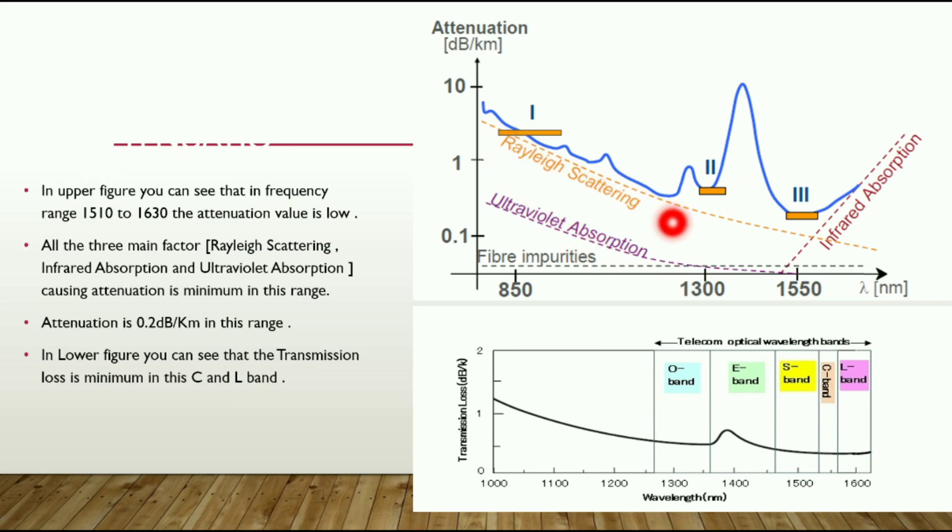You are seeing the Rayleigh scattering, the ultraviolet absorption, and the infrared absorption. These are the three main factors which are below in this range of 1550 nanometers.